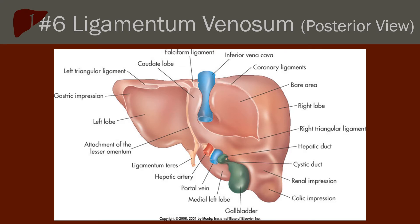The posterior view of the liver again shows the ligamentum venosum on the superior portion, noting where the lesser omentum — also known as the gastro-hepatic ligament — attaches.